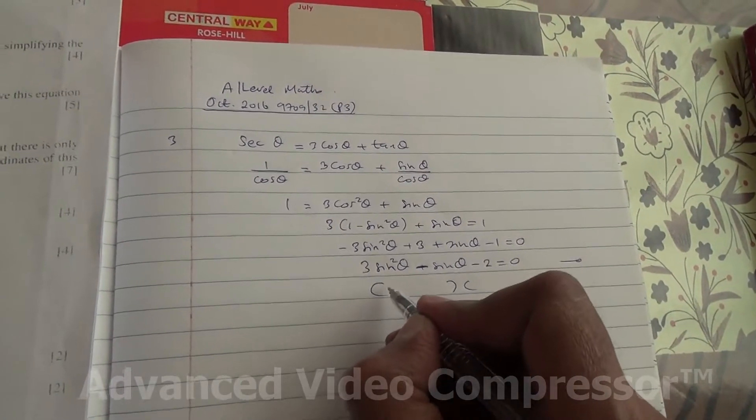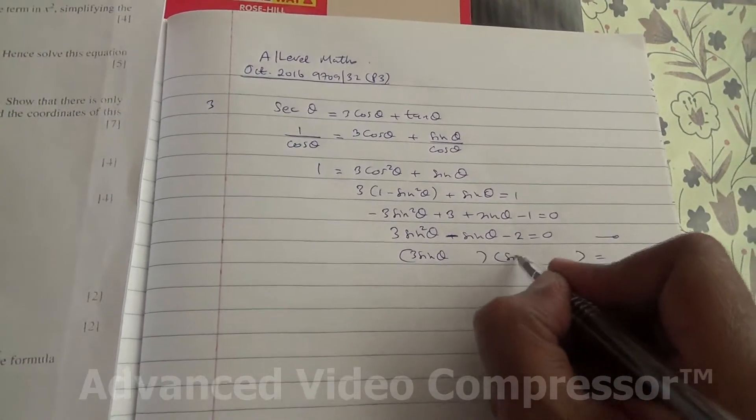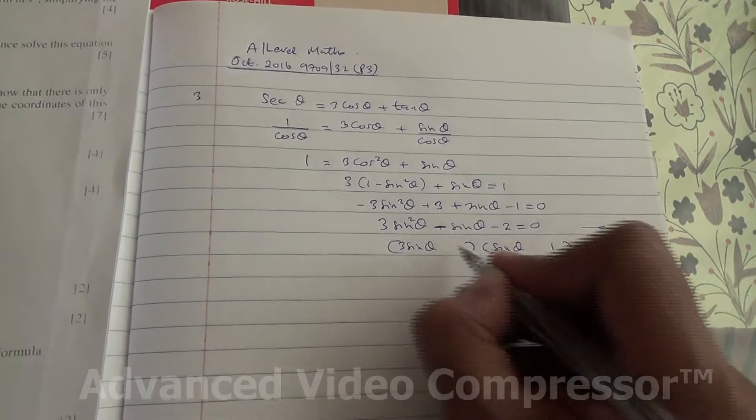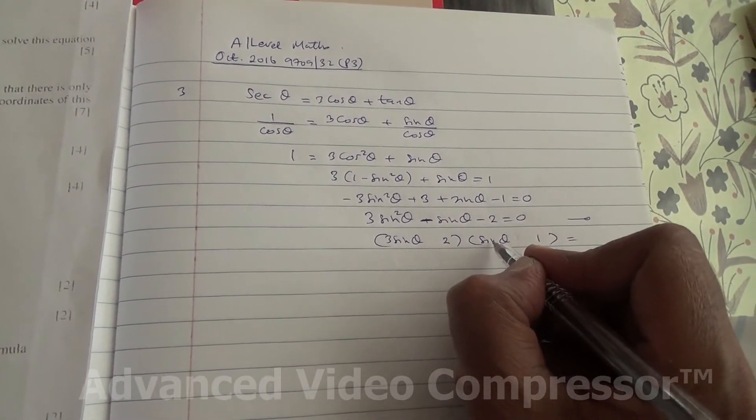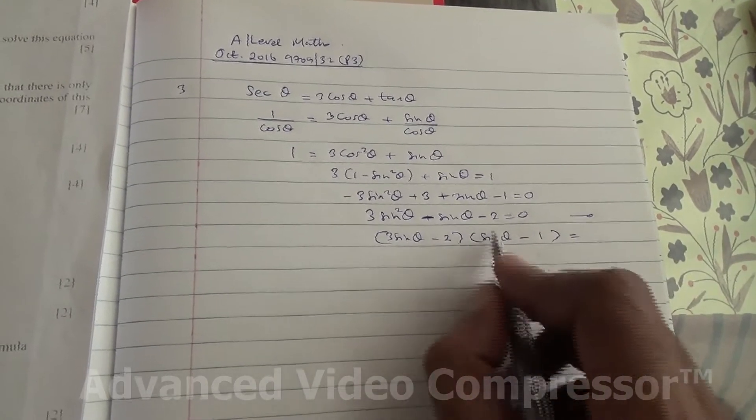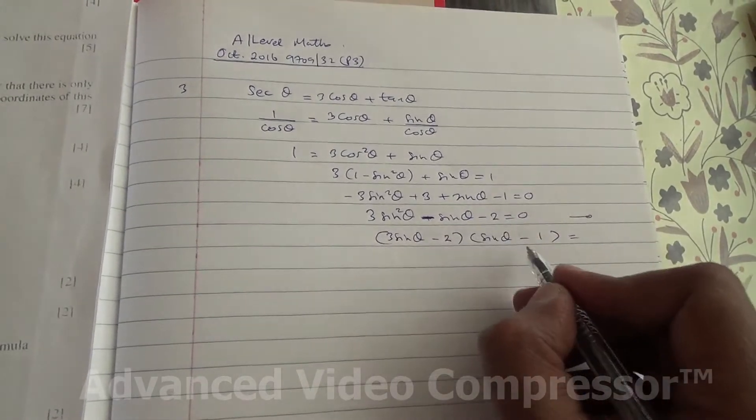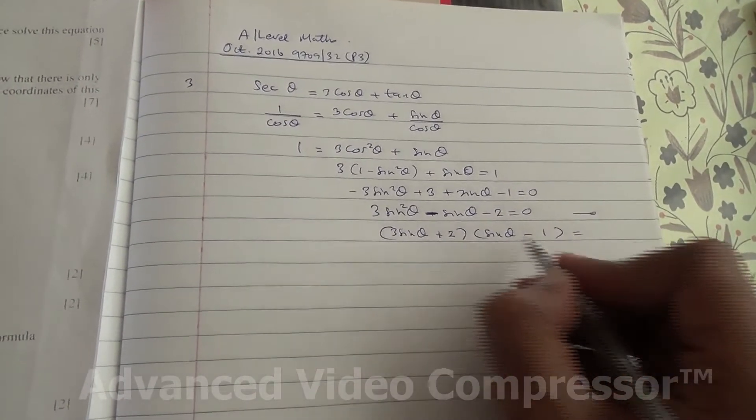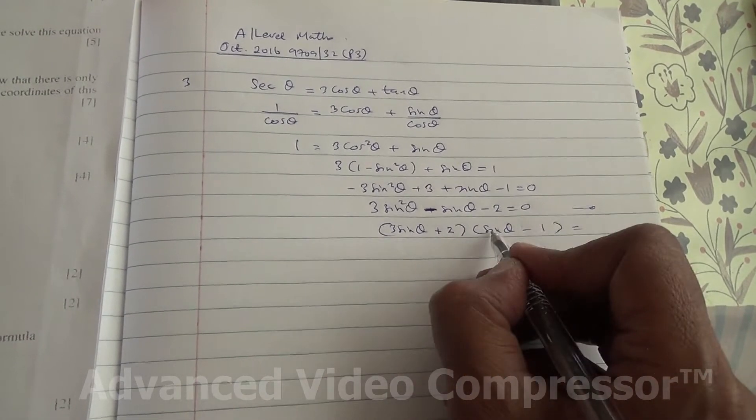Now we need to solve it. So then, 3 sin theta, sin theta, we can put 1 here and 2 here. So we can put this as 2 sin theta. So here we've got to have minus. So let's put this as plus. Minus 1 times 3 sin theta is minus 3 sin theta, plus 2 sin theta is minus sin theta.